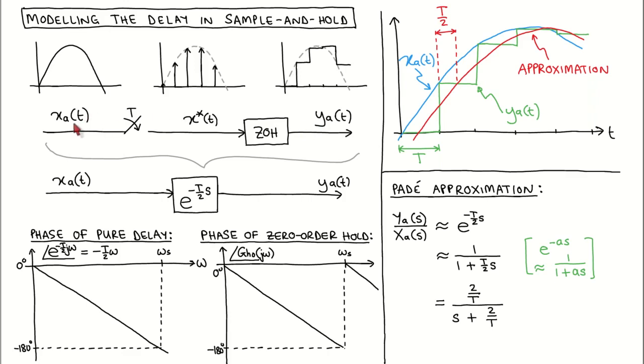However, we can set up a more accurate approximation, which might be useful when the sampling frequency is lower. For this more accurate approximation, we model the sample and hold as a delay of half a sampling period.